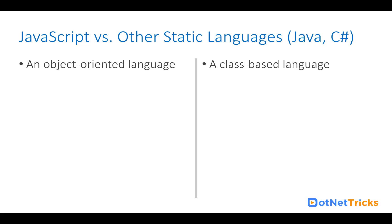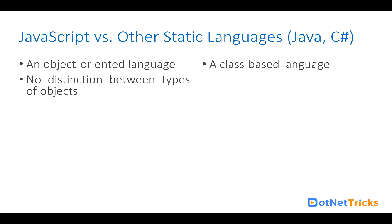Outside the class you cannot write code in Java and C#, but in JavaScript it is possible. It is not mandatory to create an object everywhere, and in JavaScript by default everything can act as an object. JavaScript is considered an object-oriented language and there is no distinction between the types of objects.